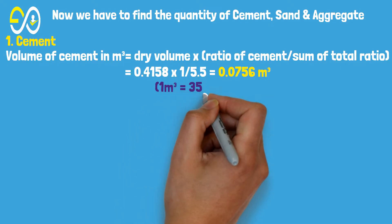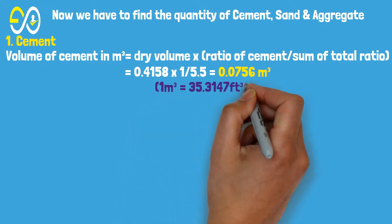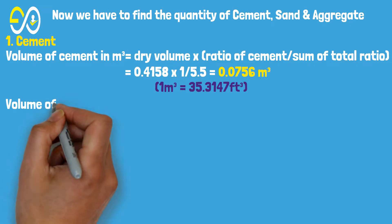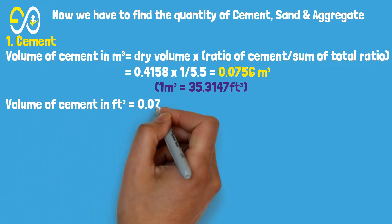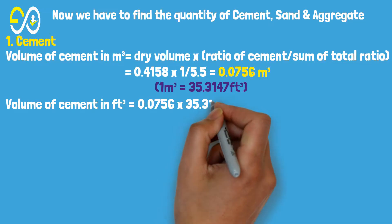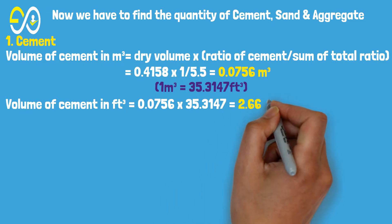One cubic meter equals 35.3147 cubic feet. Volume of cement in cubic feet equals 0.0756 times 35.3147, which equals 2.66 cubic feet.